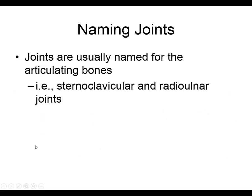How do we name a joint? Sometimes the joint has its own name, like hip joint, shoulder joint, or elbow joint. But in anatomical terms, you can name it according to the bones that articulate — like sternoclavicular joint, radio-ulnar joint, or glenohumeral joint, which is the shoulder joint. Sometimes we name them simply as elbow, wrist joint, or ankle joint.